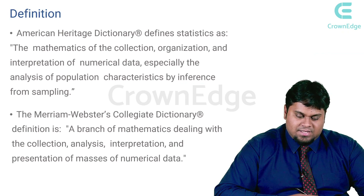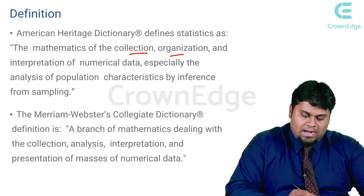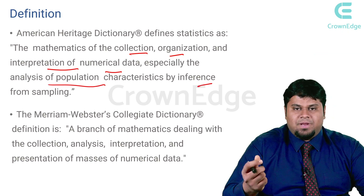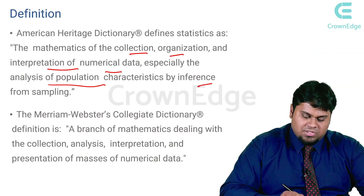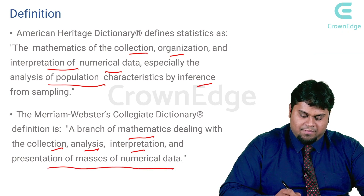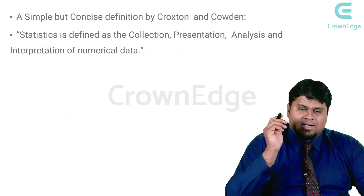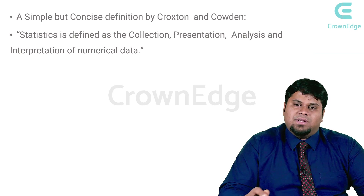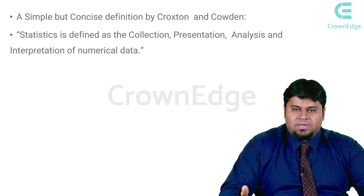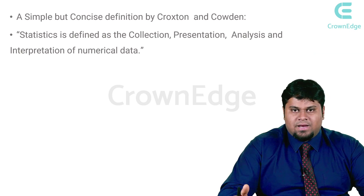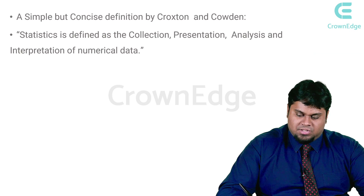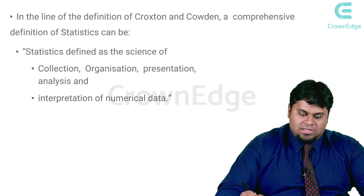According to the American Heritage Dictionary, statistics is defined as the mathematics of the collection, organization, and interpretation of numerical data, especially the analysis of population characteristics by inference from a sampling population. Webster's defines it as a branch of mathematics dealing with the collection, analysis, interpretation, and presentation of masses of numerical data. A simple but concise definition by Croxton and Cowden states that statistics is the collection, presentation, analysis, and interpretation of numerical data.